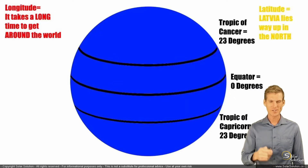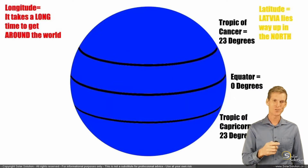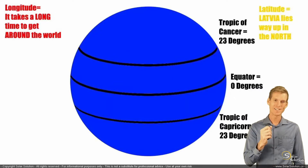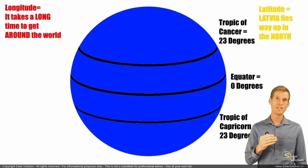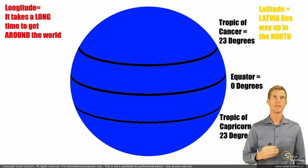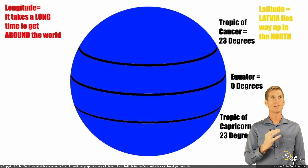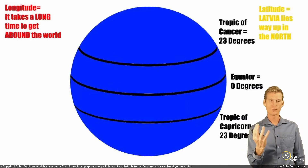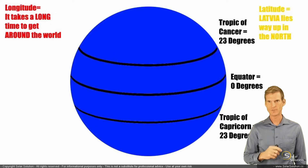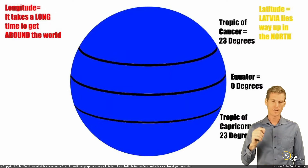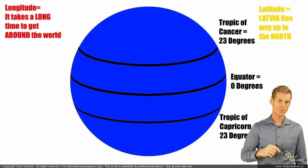That was a fairly long introduction, but I want to make sure that you really understand this basic knowledge and the numbers before I proceed and explain other things. So, you understand longitude, latitude, how the grid coordination works around the world, and you understand what the equator is. Let's start from the equator.